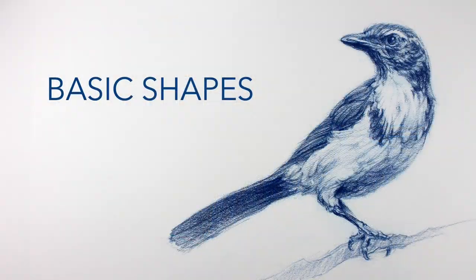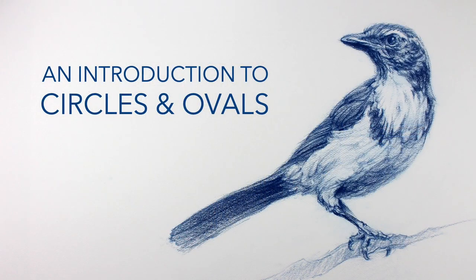Most people are familiar with the idea of primary colors — that by mixing together red, blue, and yellow you can create any color imaginable. However, most people are not familiar with the idea that form works the exact same way. All form, no matter how complex, distills down to a few basic shapes, and by understanding how to draw these shapes you can draw anything you want. The basic shapes we're going to talk about today are circles and ovals.